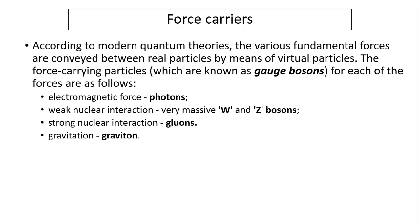Force carriers. So we know the bosons are force carriers, and they are kind of communicating between the particles and communicating the force between them. So according to modern quantum theories, the various fundamental forces are conveyed in real particles by means of virtual particles. The force carrier particles, which are known as gauge bosons for each of the forces, are as follows. Electromagnetic, that's called photon, we use gamma to represent that. Weak nuclear interaction, W and Z boson, and strong nuclear force, we use gluon. And gravitation, we use graviton. This is why the gravity doesn't belong to this standard model, is because people cannot, we haven't found a graviton.